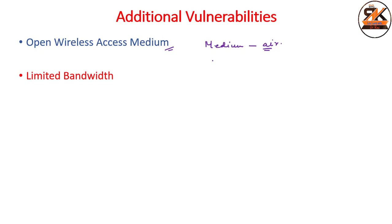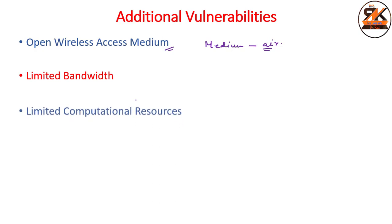Another additional vulnerability is limited bandwidth. Although technologies like 4G, 5G, and even 6G provide a lot of bandwidth, the general concept is that wireless networks have limited bandwidth compared to wired counterparts. In wired networks, more bandwidth can be added by installing parallel fiber, but in wireless networks with a fixed access point having a particular bandwidth, that bandwidth cannot be increased simply by deploying another access point — you can have a different network but not increase the bandwidth.